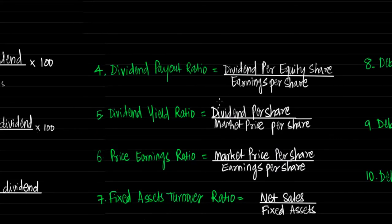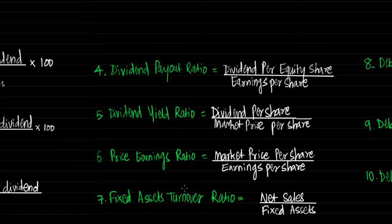Next is dividend payout ratio — how much dividend the company is paying out of earnings — calculated as dividend per equity share divided by earnings per share, showing what percent of earnings is distributed as dividend. Next is dividend yield ratio, which shows returns on investment if a person invests in shares right now, calculated as dividend per share divided by market price per share. Next is price earning ratio, calculated as market price per share divided by earnings per share — it represents how many rupees a person is willing to spend to earn Re 1 behind each equity share. Next is fixed assets to turnover ratio, calculated as net sales divided by fixed assets, which indicates efficiency in utilization of fixed assets; a higher ratio indicates higher efficiency.